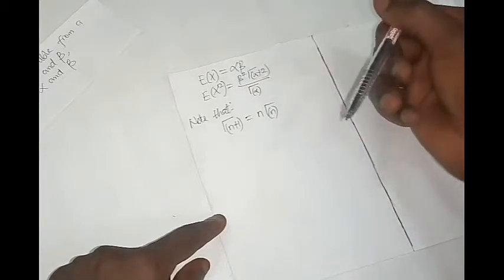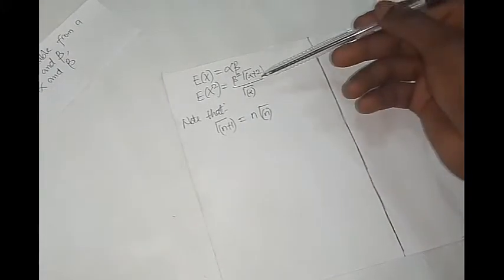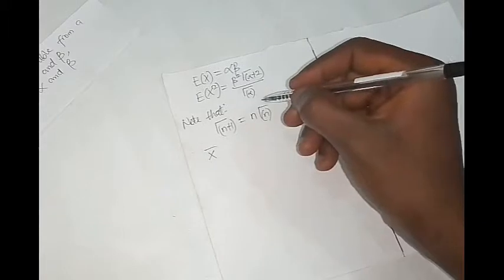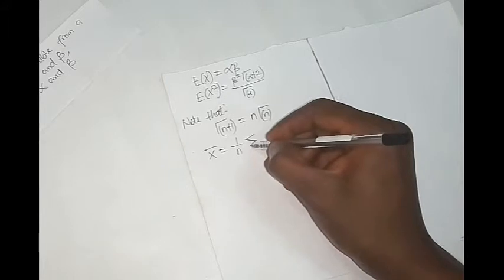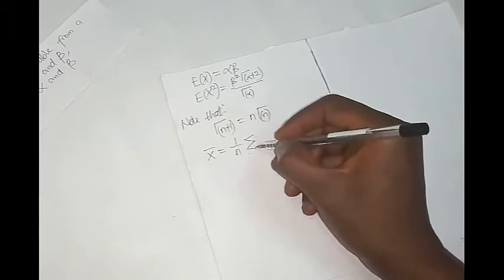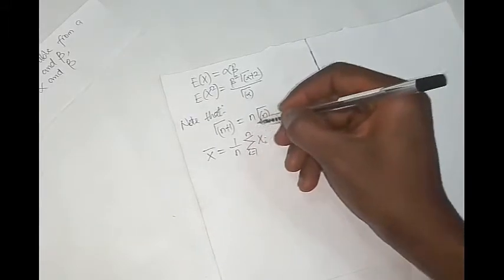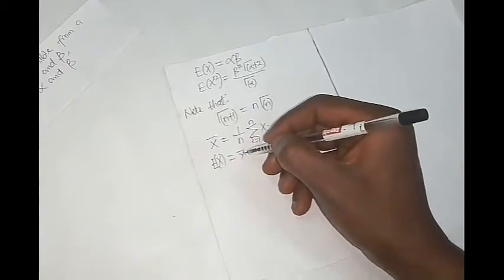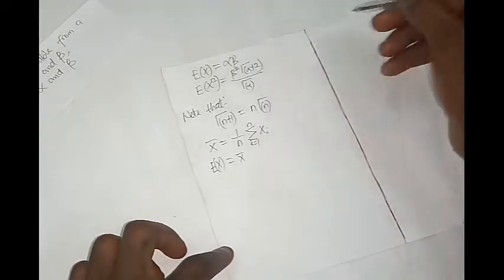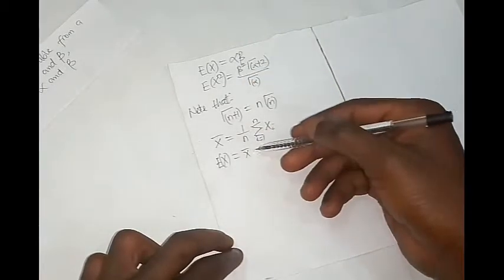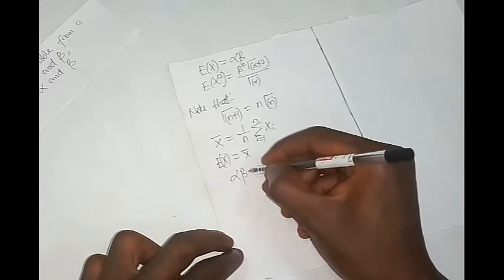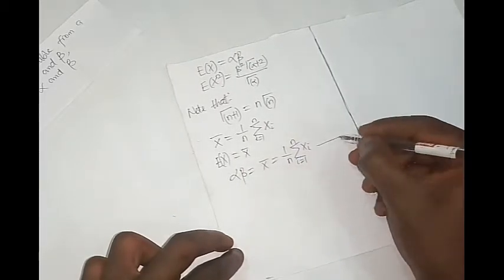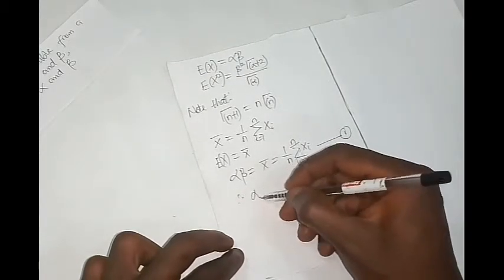In view of this, to help us get the expected value of x squared, which is given in terms of the gamma function of alpha plus 2. Now the mean of a random variable is given as 1 over n times the summation of x_i from i equals 1 to n. The expected value of x is also the same as the mean. So alpha beta equals the mean, which equals 1 over n times the summation of x_i from i equals 1 to n. Call this equation 1.